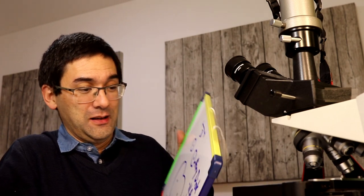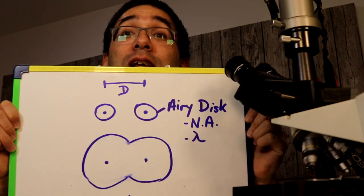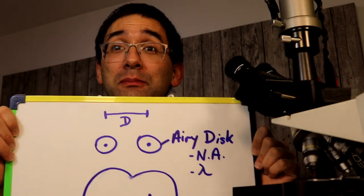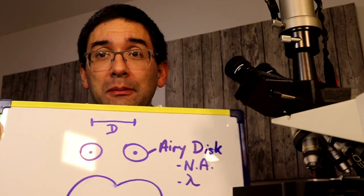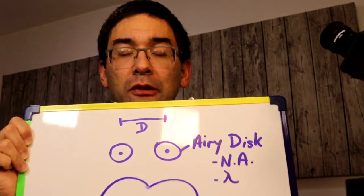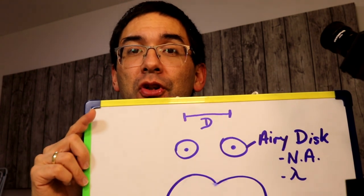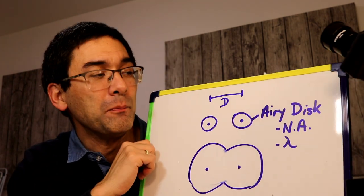I want to explain this to you, and I've prepared a little board here to help. I'm going to move the other microscope out of the way, and I'd like to talk a little bit about the resolution limit and the numerical aperture. I'm going to try to keep the math to a minimum.